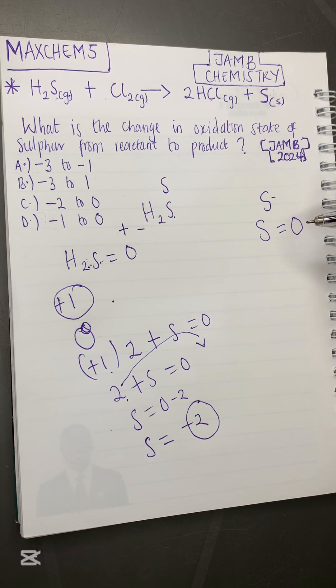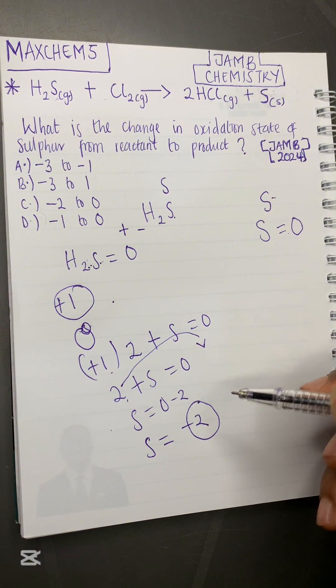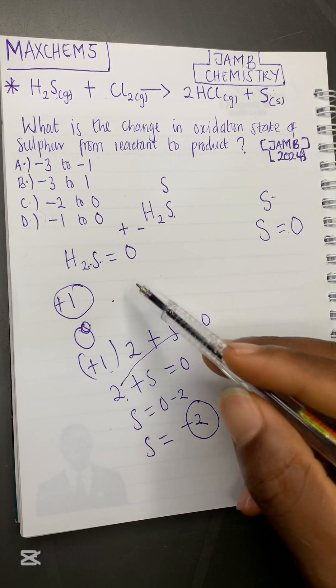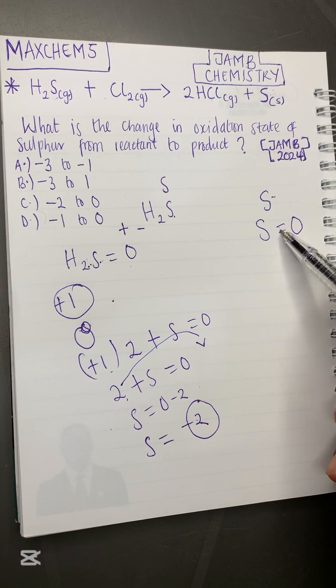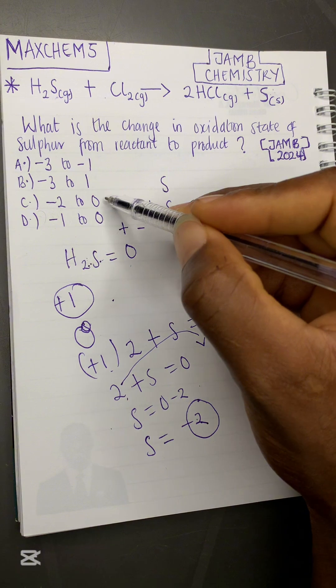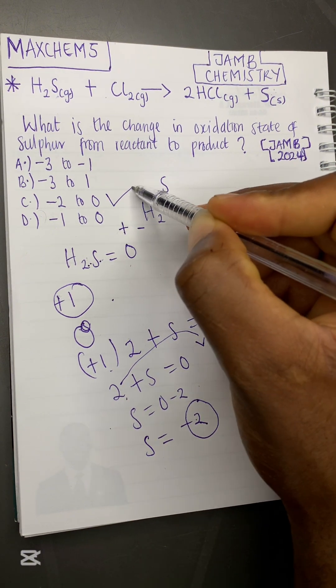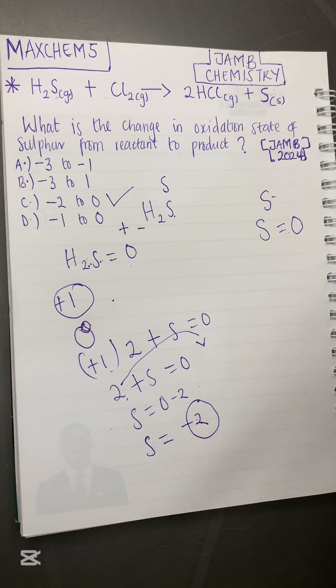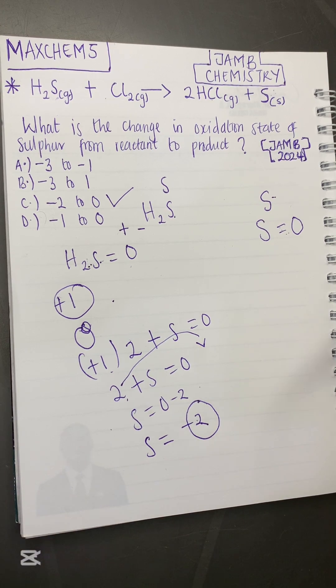Our answer is that sulfur moved from an oxidation state of minus two here in H₂S to zero in sulfur solid. So the answer is from minus two to zero. That is option C. I believe this is very simple to understand. If you have any questions you can drop them in the comments and I will see you guys in the next one. Peace out.